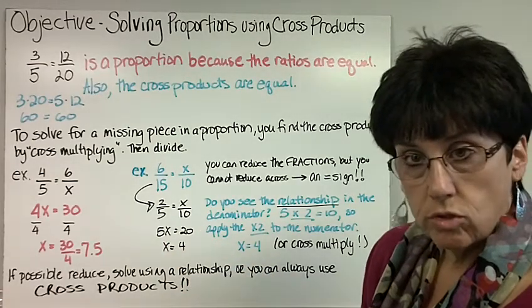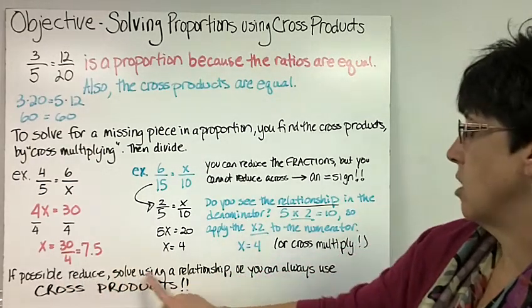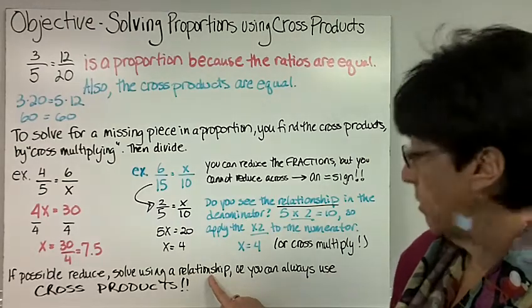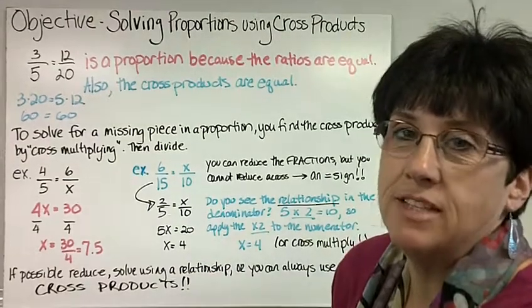So when you're solving proportions, if possible, reduce. If possible, solve by using a relationship. But you can always use cross products. That's it.